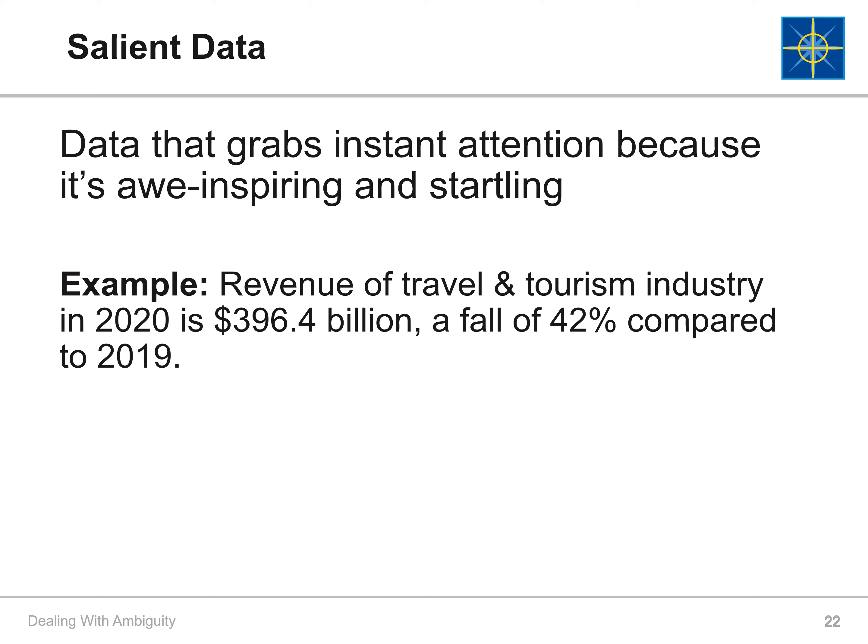Let's talk about salient data. Salient data grabs your attention due to its startling nature. For example, the revenue of the travel and tourism industry in 2020 was $396.4 billion — a fall of 42% compared to 2019. That's startling, but does it mean that tourism is going to be wiped out? Or are we just not counting the effect of the pandemic? We don't know what it means, which can cloud our decision-making.